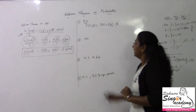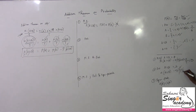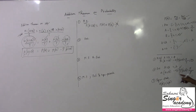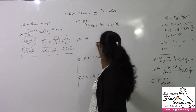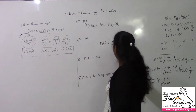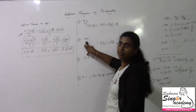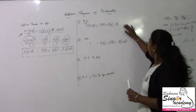Next — the exhaustive case: A ∪ B = S, so n(A ∪ B) = n(S). Therefore P(A ∪ B) = n(S)/n(S) = 1. So for exhaustive events, P(A ∪ B) = 1 = P(A) + P(B) − P(A ∩ B).